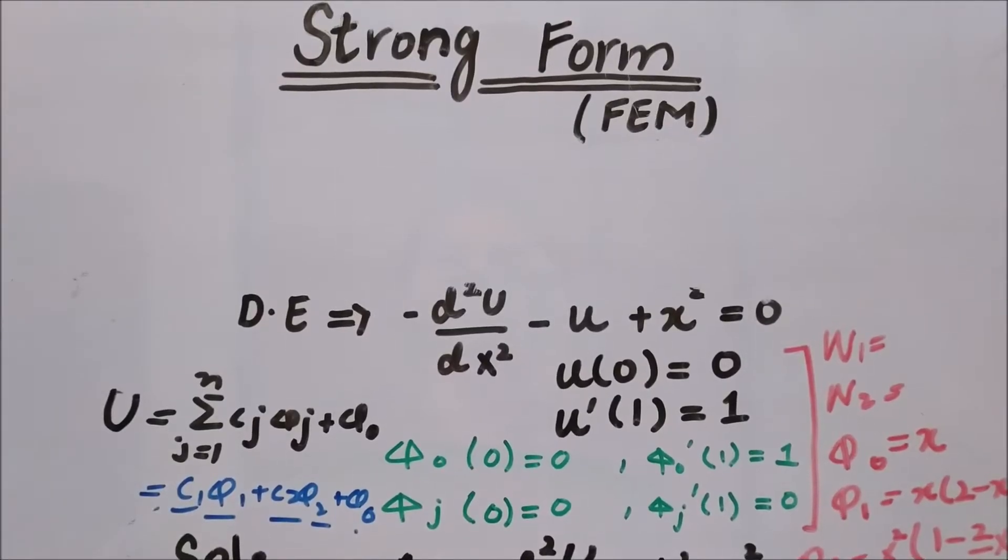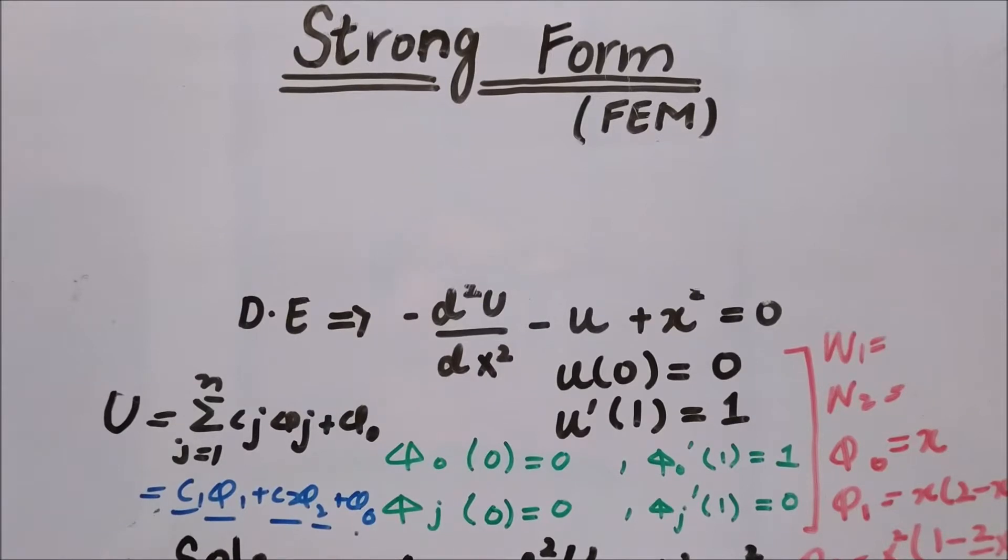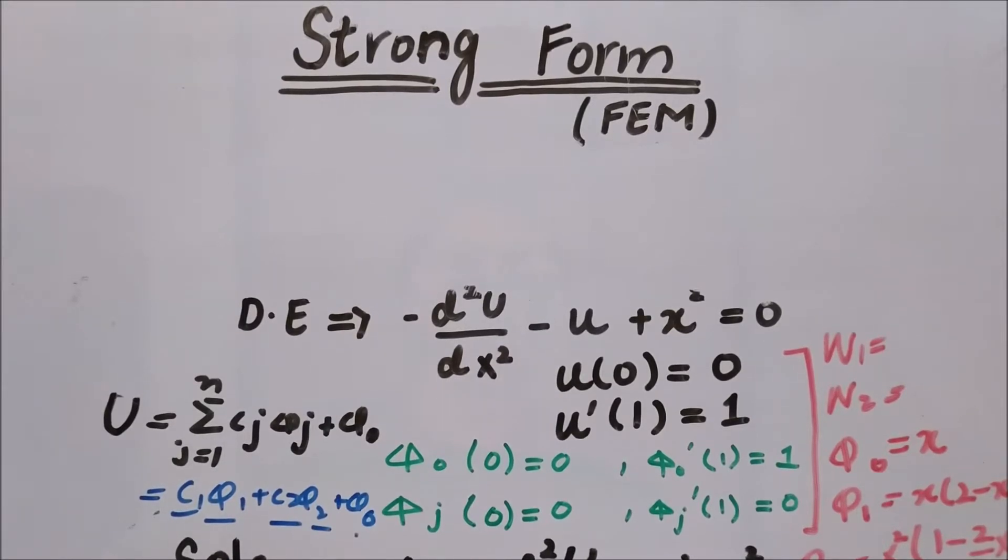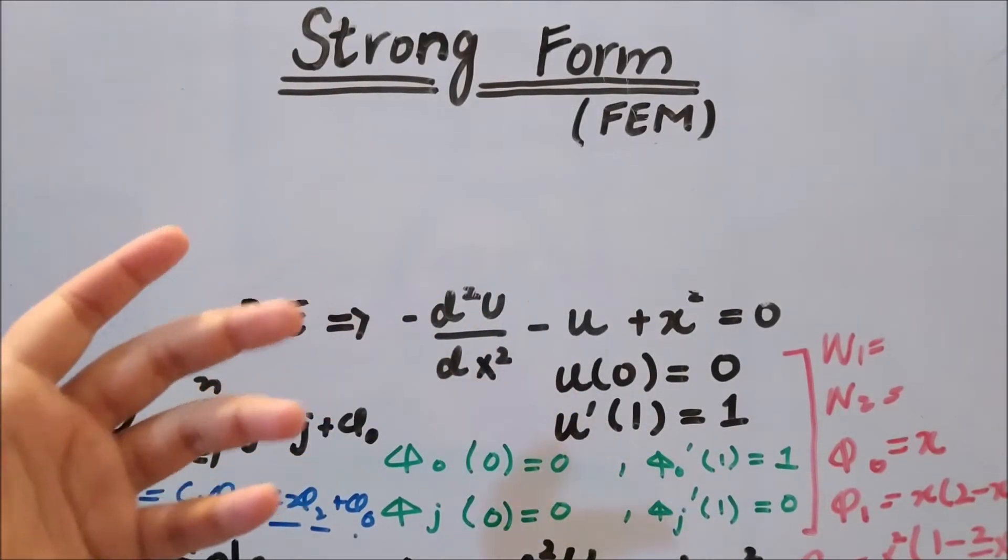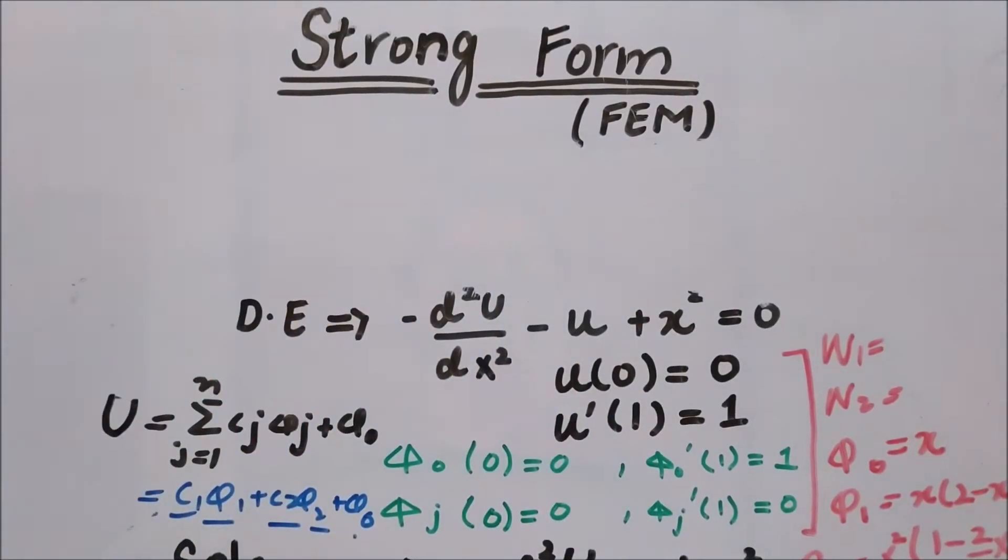Hello everyone, this is DA from eAcademy. Today this video is about the fourth method in the line of strong form, or we can say the type of weighted residual method. The fourth method is the collocation method.